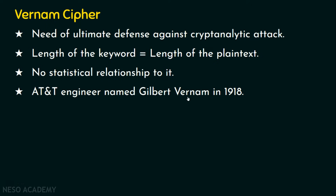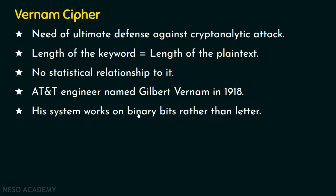AT&T engineer Gilbert Vernam proposed the Vernam cipher in 1918. Vernam proposed a system that works on binary bits rather than letters. In the previous ciphering techniques the system worked on alphabets or characters directly, but this Vernam cipher works on binary bits rather than letters or alphabets.